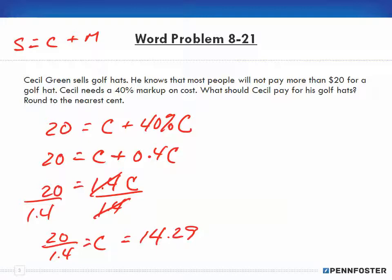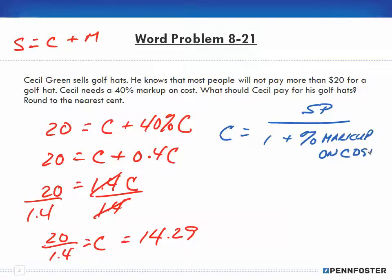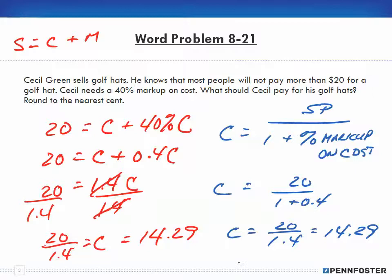If we wanted to check this, we could say that our cost would be equal to the selling price over 1 plus the percent markup on the cost. So our selling price is $20. The cost would equal $20 over 1.4. And when you divide that, you end up with your $14.29 at your cost as your double check.